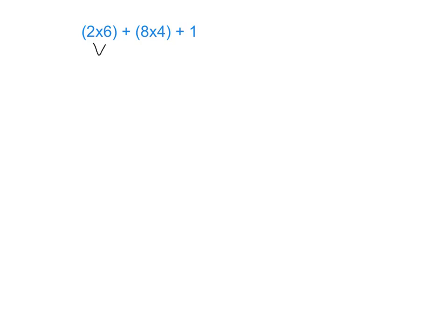I see two sets of parentheses, so I go inside the first one. Working left to right, 2 times 6 is 12. Then I do my second set of parentheses: 8 times 4 is 32. I bring down my addition and the 1 on the outside. After checking grouping symbols, there are no exponents — the most powerful operation — for these types of problems.